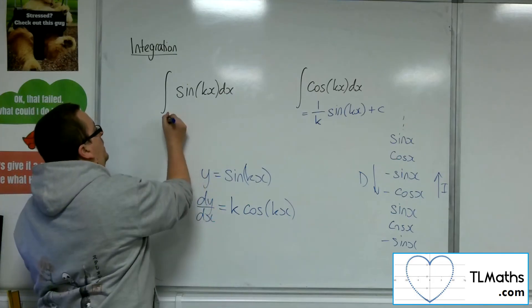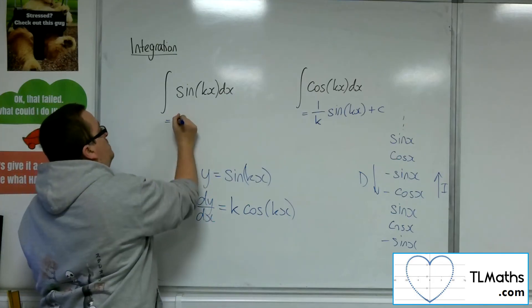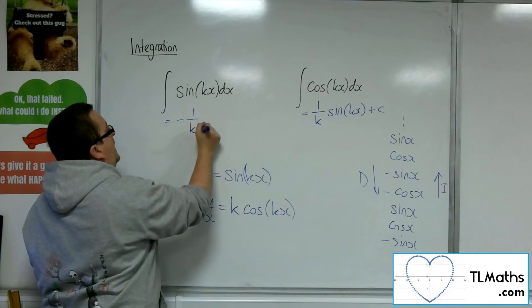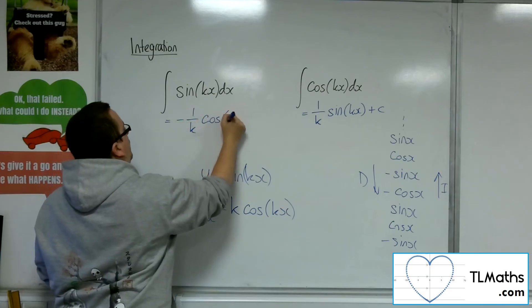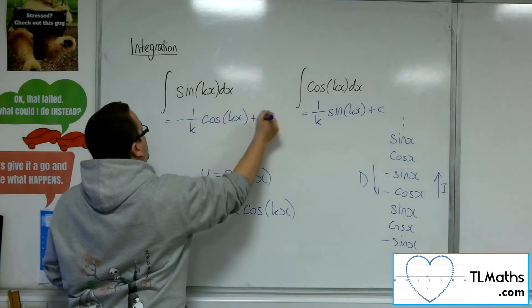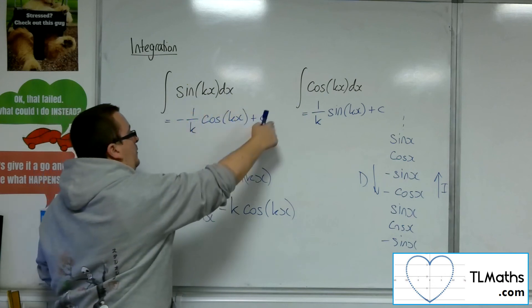So, likewise, this will integrate to minus 1 over k, cosine of kx plus c. Because when I differentiate this bit in blue, the c goes.